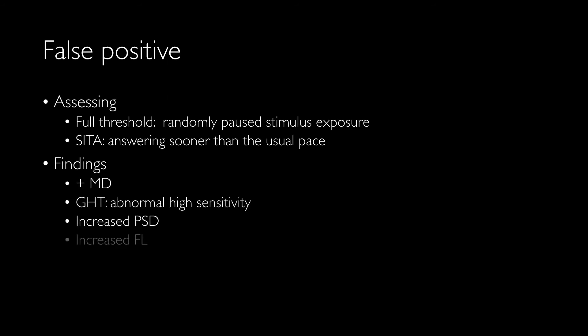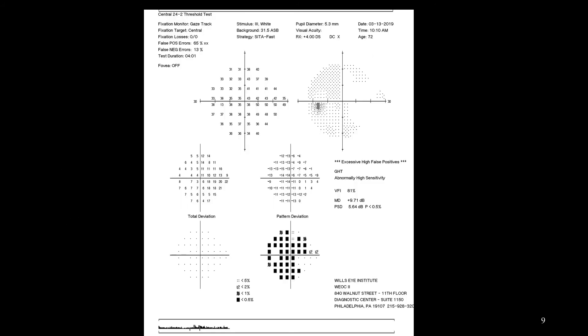The findings of false positives are: positive mean deviation, abnormal high sensitivity in the glaucoma hemifield test, and increased pattern standard deviation, as well as increased fixation losses.